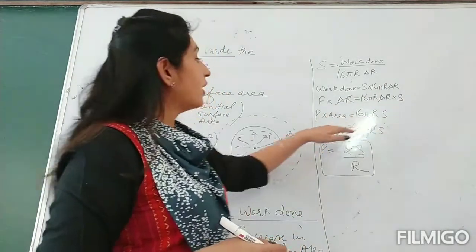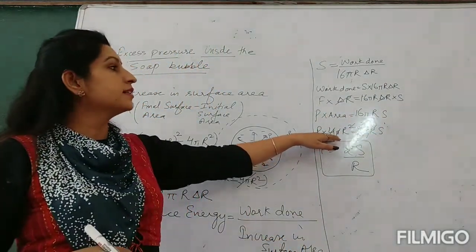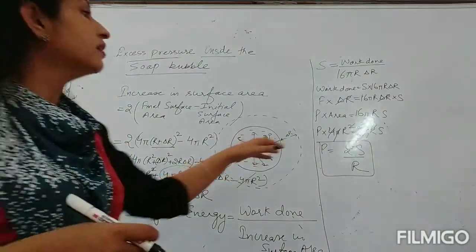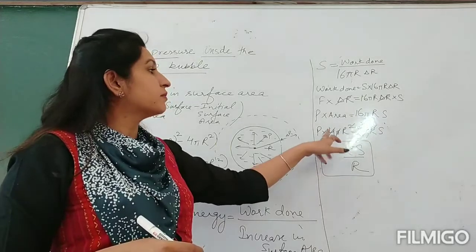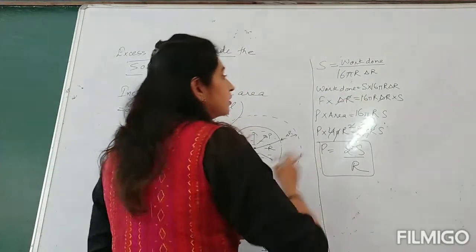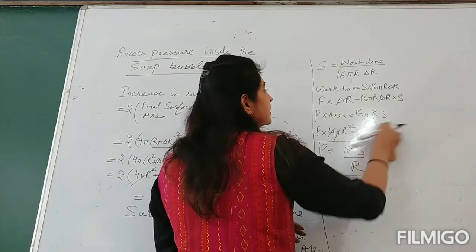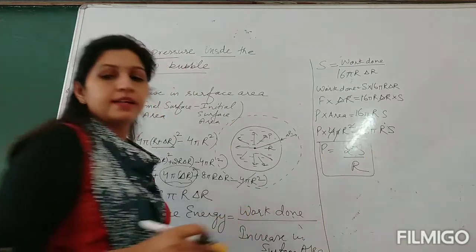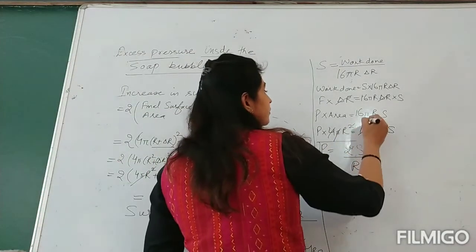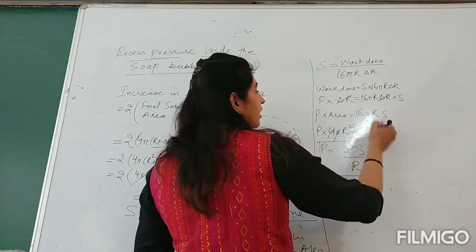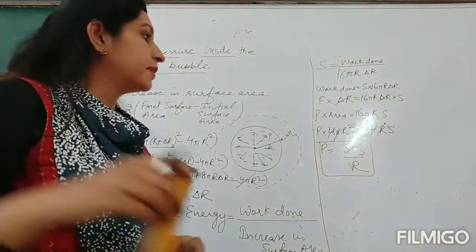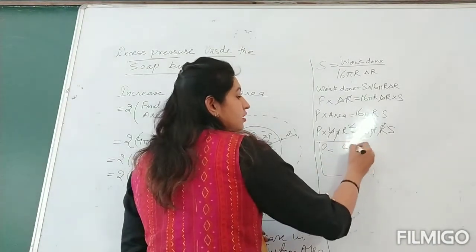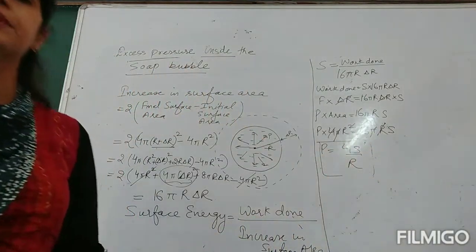Pressure times area equals 16πRS. The initial surface area is 4πR². So P × 4πR² = 16πRS. When you do the cancellation, 4π and R cancel giving P = 4S/R. The excess pressure inside a soap bubble is 4S/R — which is double that of the air bubble or liquid drop.